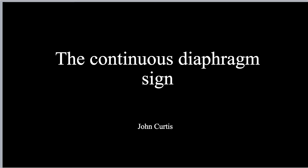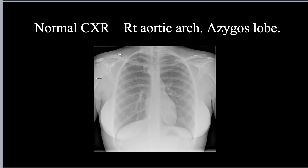In this video I'll be discussing the continuous diaphragm sign. On a normal chest radiograph, the diaphragm is seen because the interface of the diaphragm has a different radiographic density with the lung that sits above it. It's exactly the same principle why you see a blood vessel coursing through the lung — the blood vessel has a different radiographic density to the lung that surrounds it.